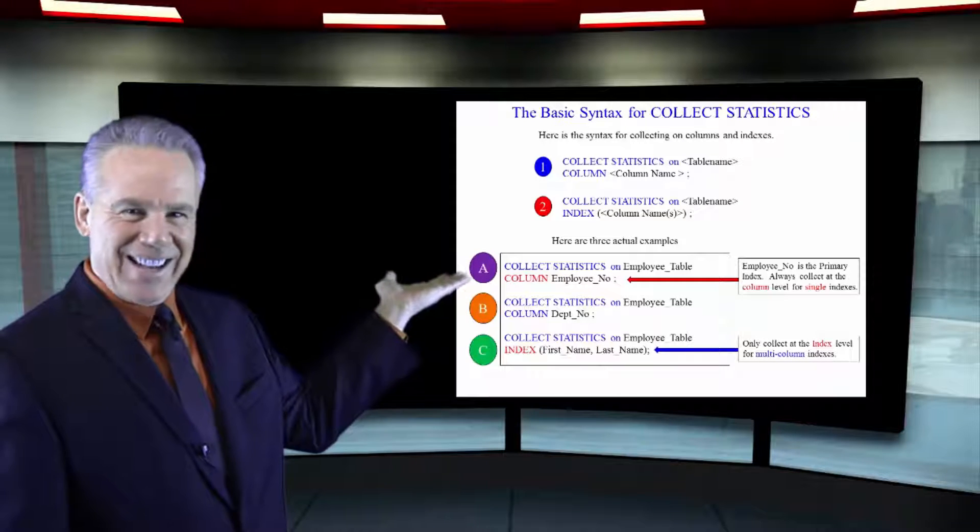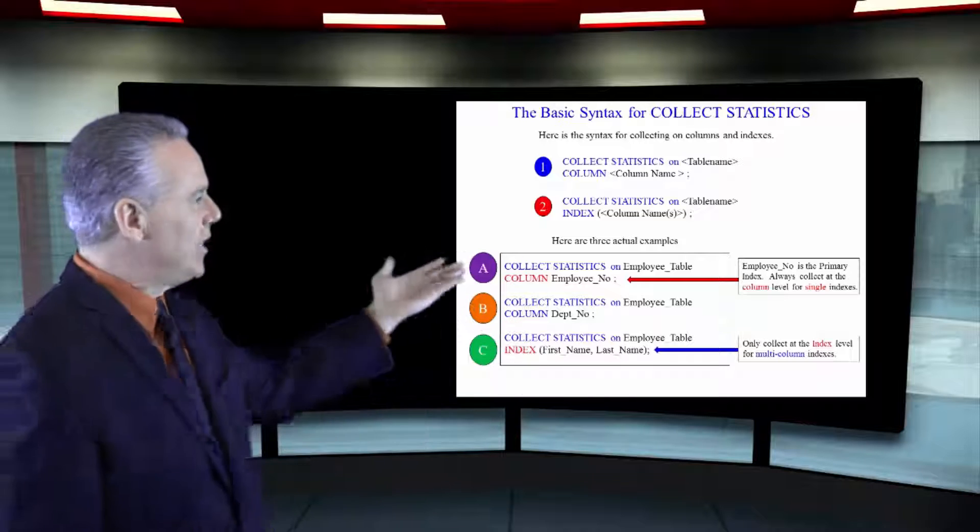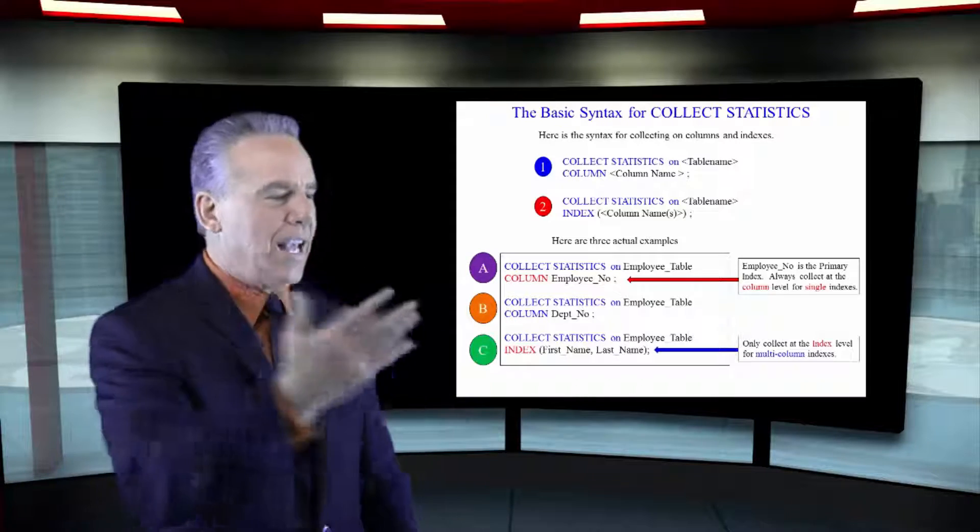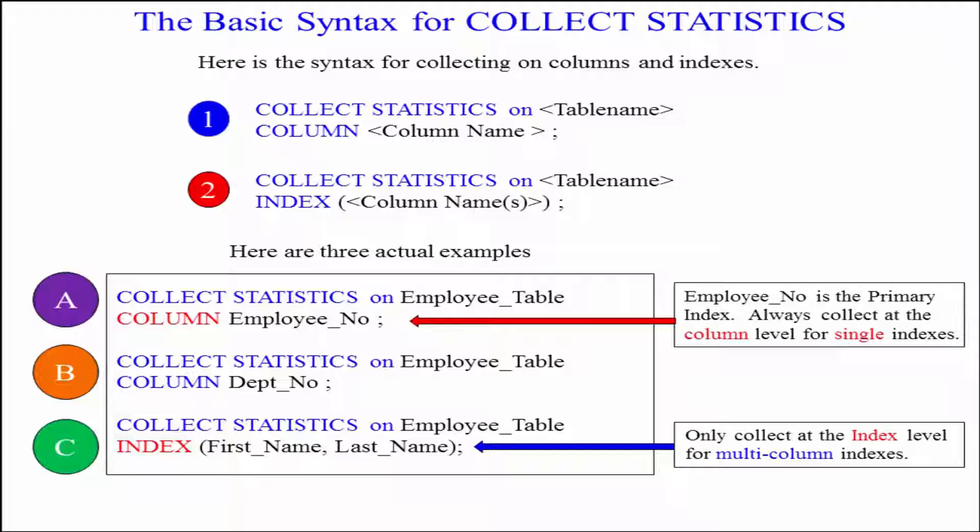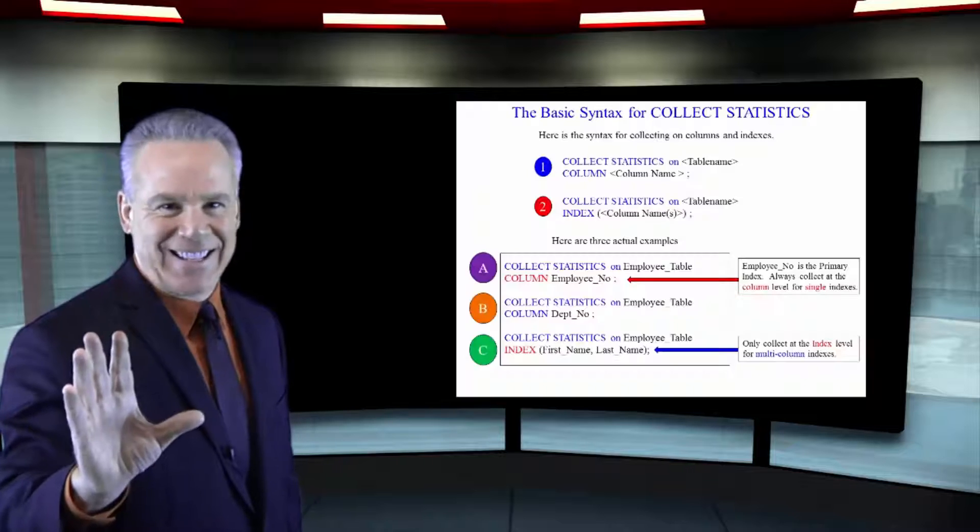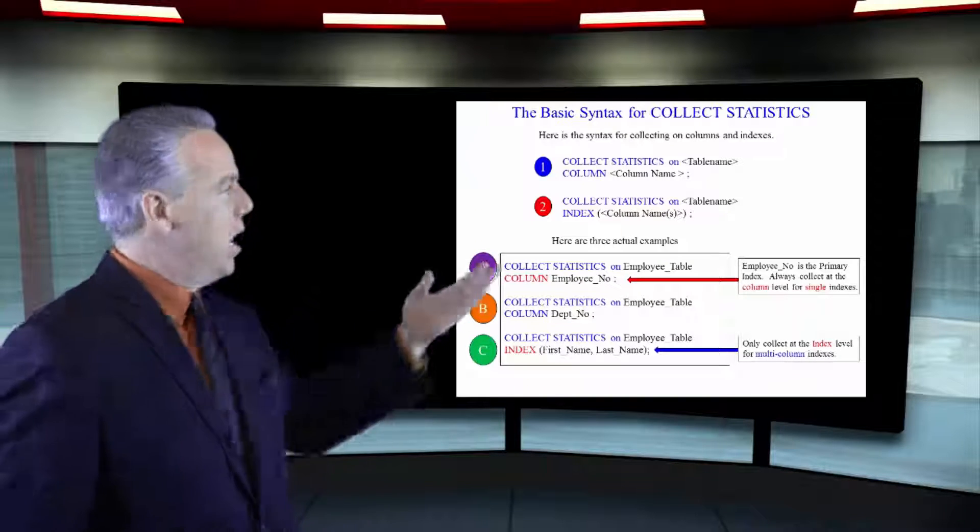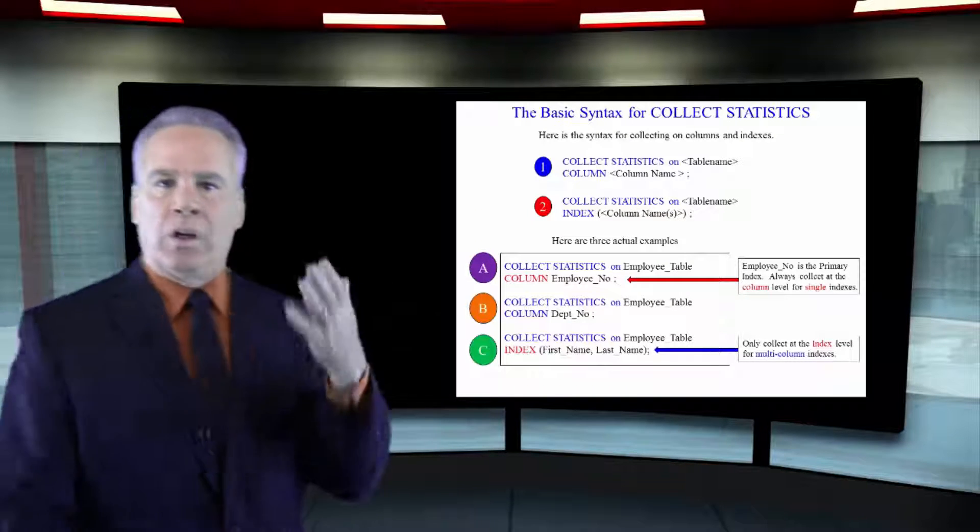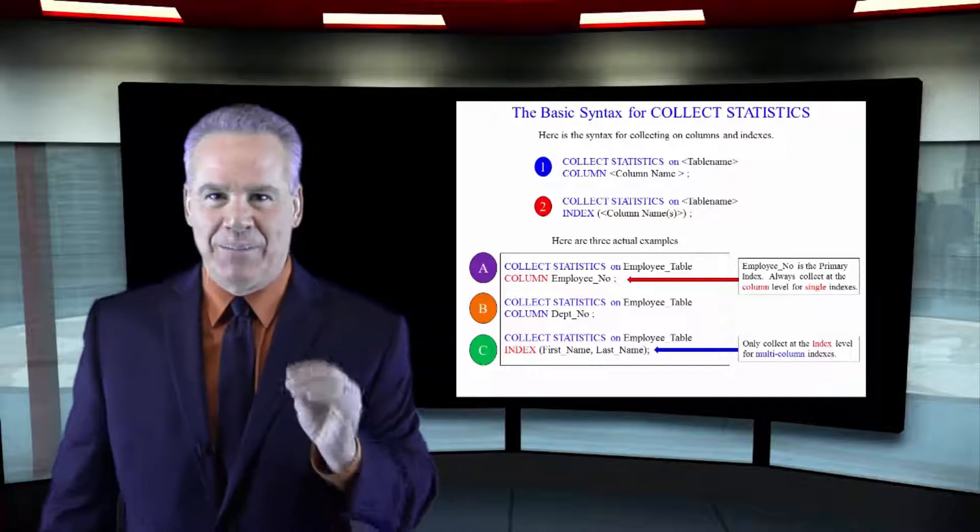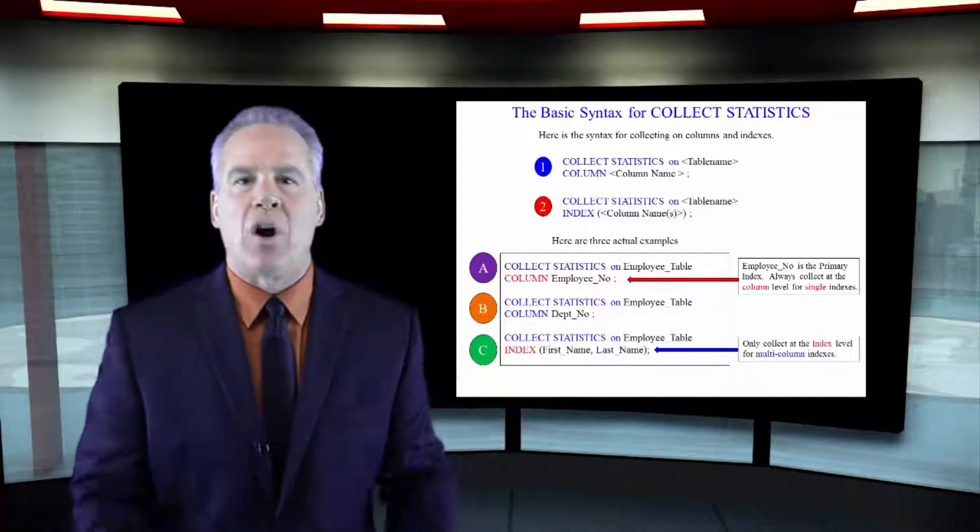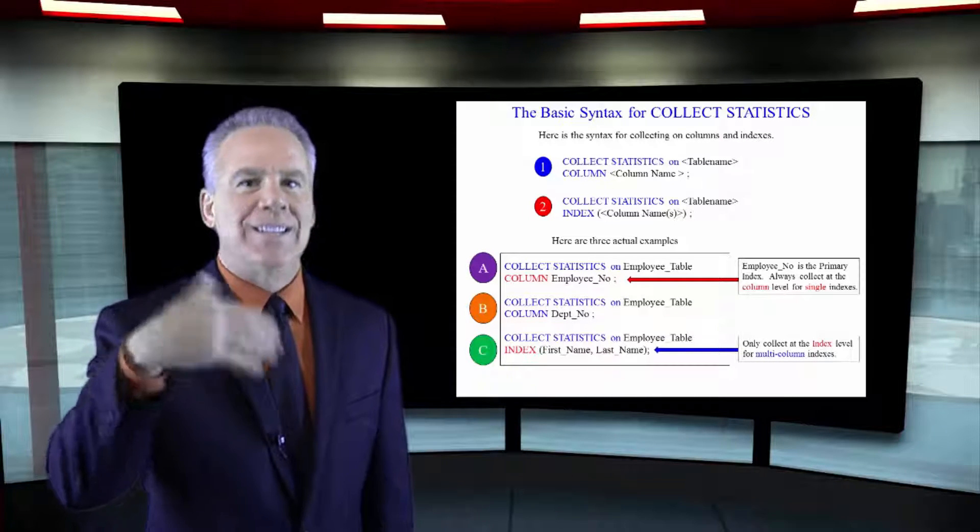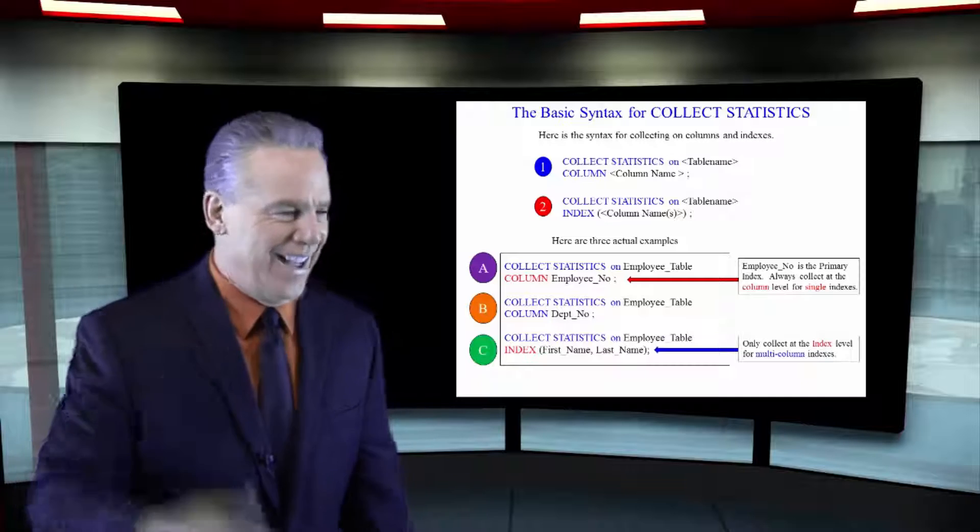In the next example, we've actually got a column here that's not an index. Collect statistics on employee table, column, department number. You know, we're joining these employee tables to department tables on Depno. That's the join column, not an index in this case, but we join on that column. So, we're going to collect statistics at the column level. The first two examples are column level statistics, even though one's an index.